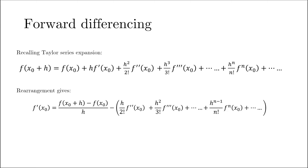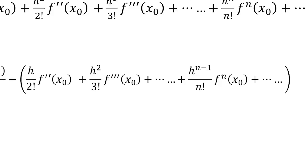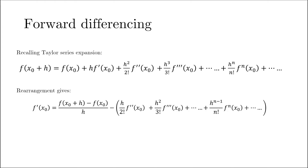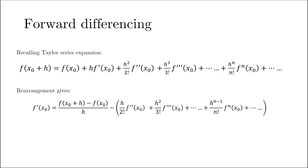I want you to focus your attention on the terms inside the bracket. The first term has a multiple of h, the second term has a multiple of h squared, and the third term has a multiple of h cubed, and so on. In the context of CFD, this h is the grid spacing or the distance between any two points. Almost always, h is less than one, so h is greater than h squared, which is greater than h cubed, and so on. The largest term inside the bracket is very likely the first term, since it is multiplied by h.